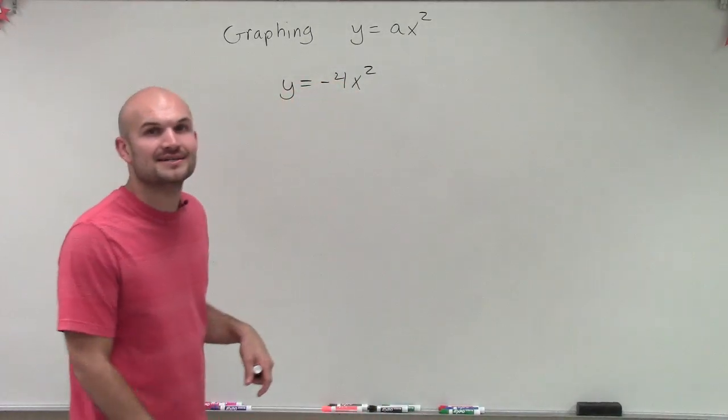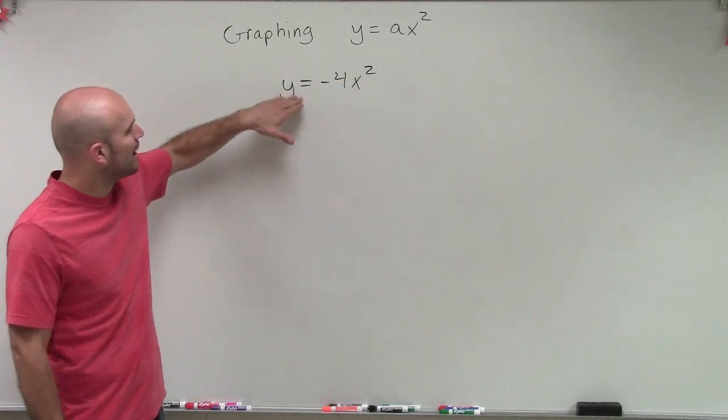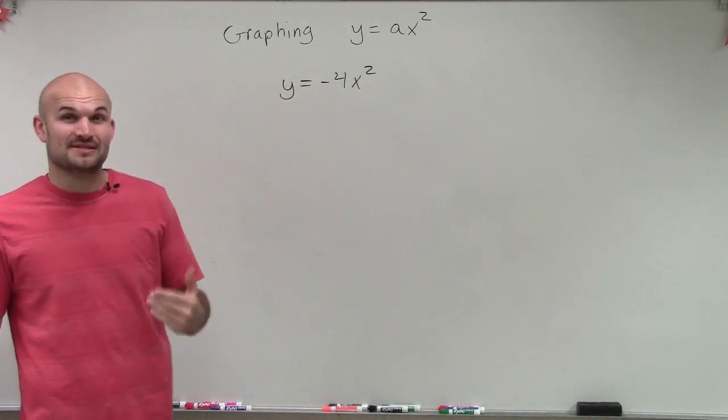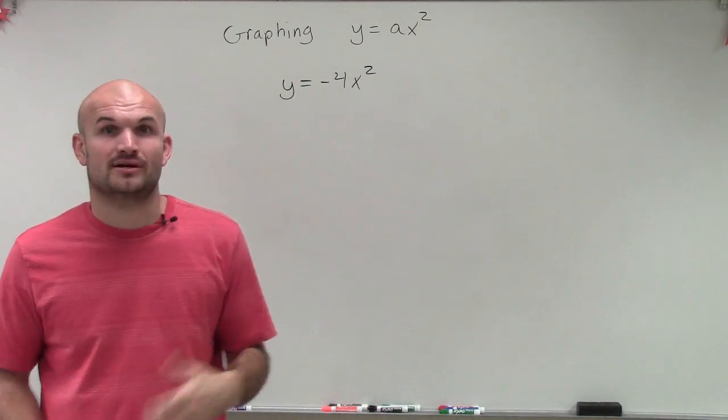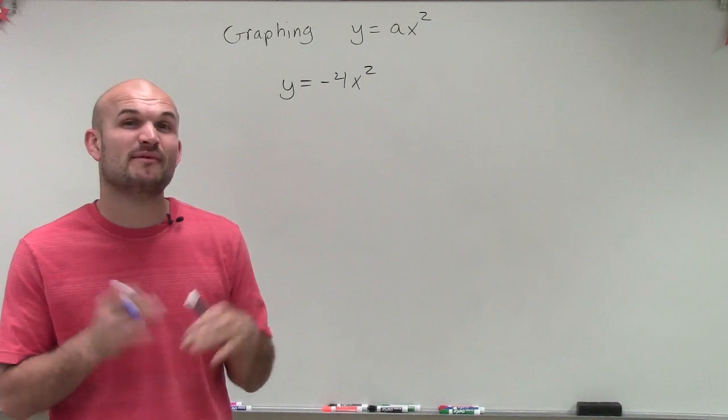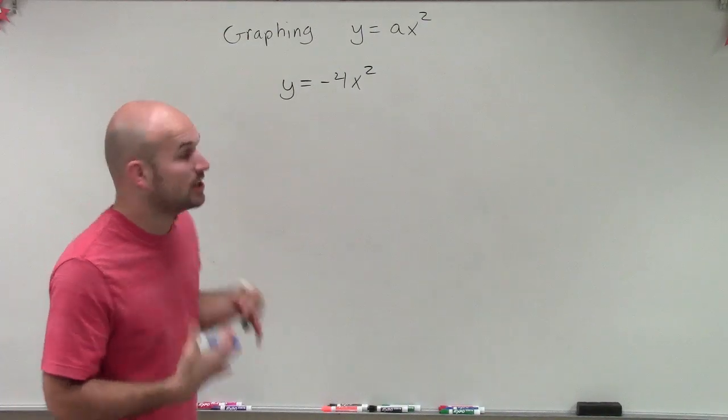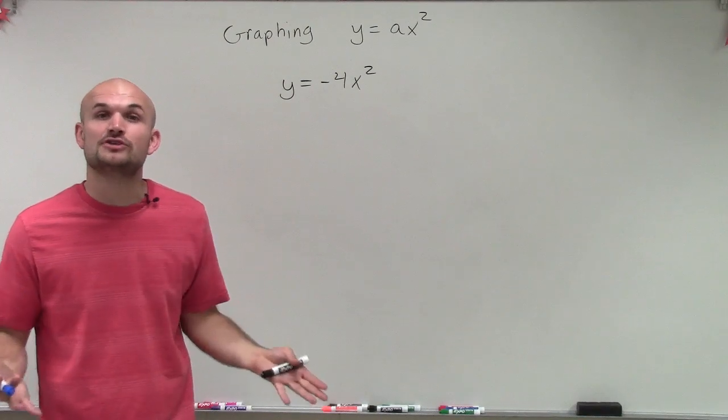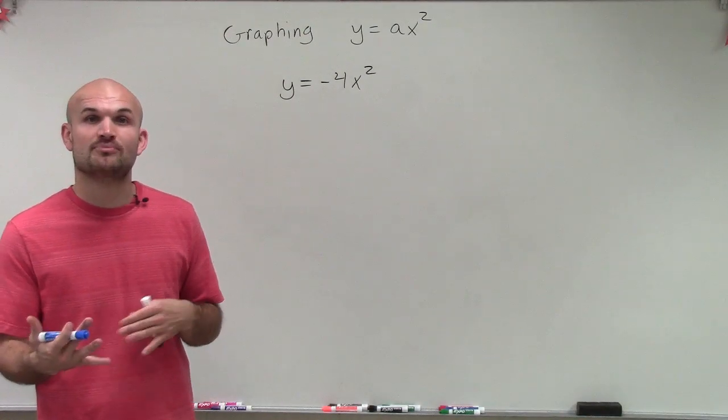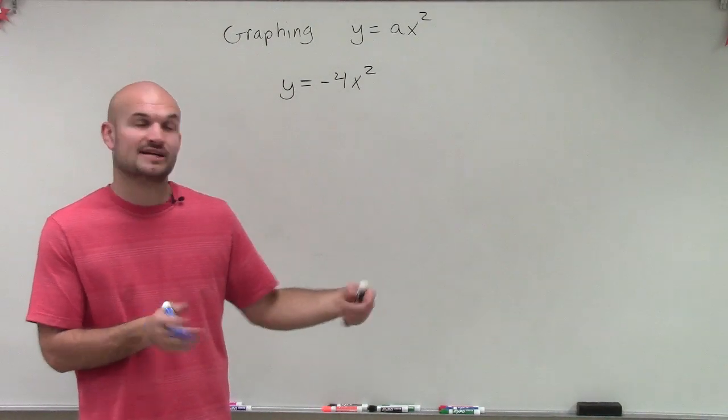So what I have here is to show you y equals negative 4x squared. Now this is a quadratic in the form of y equals ax squared. And remember when we have a quadratic in the form of y equals ax squared, we know that our axis of symmetry is going to be zero. That's going to be very important for us to determine what coordinates we're going to find to graph our quadratic.